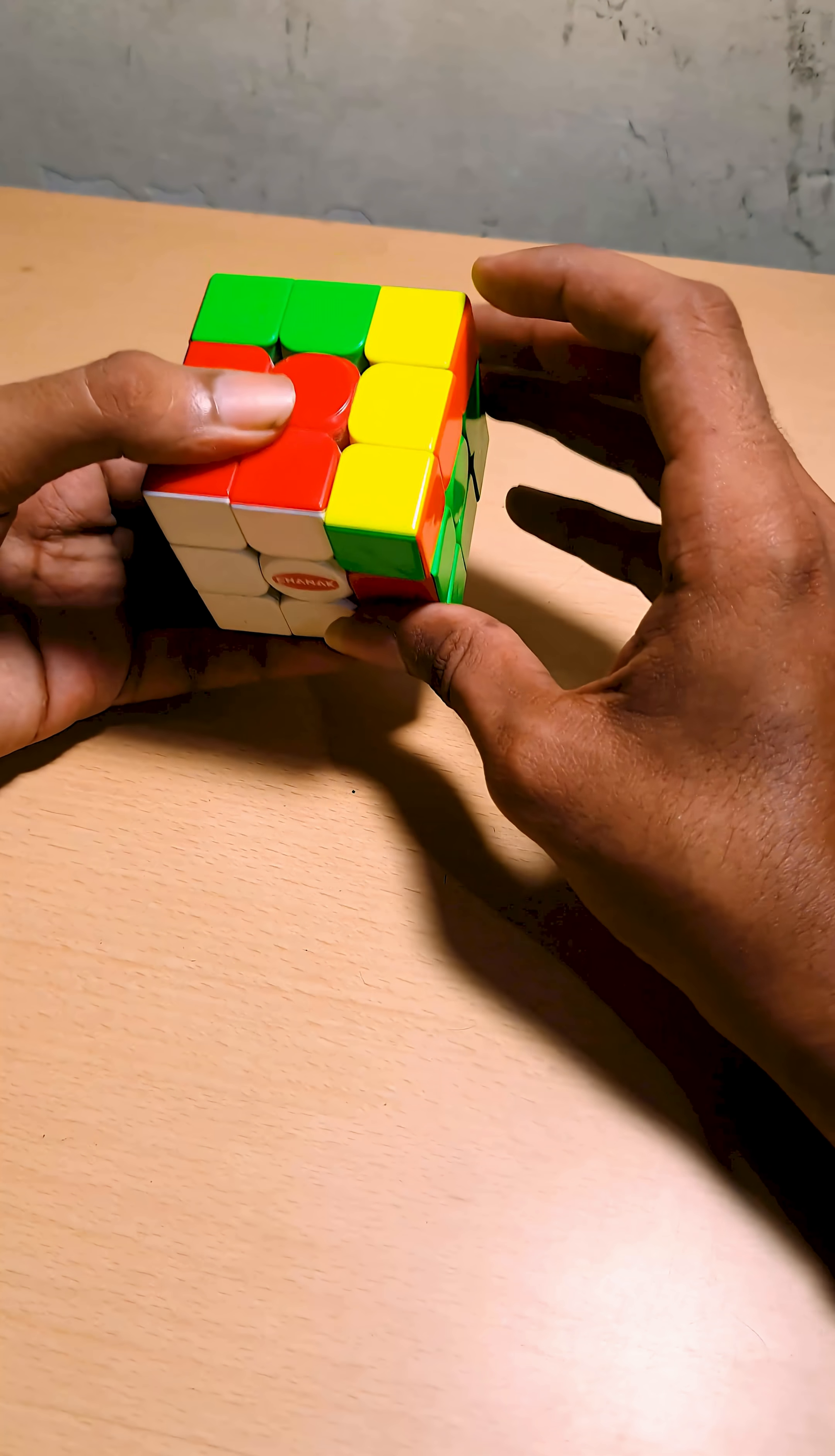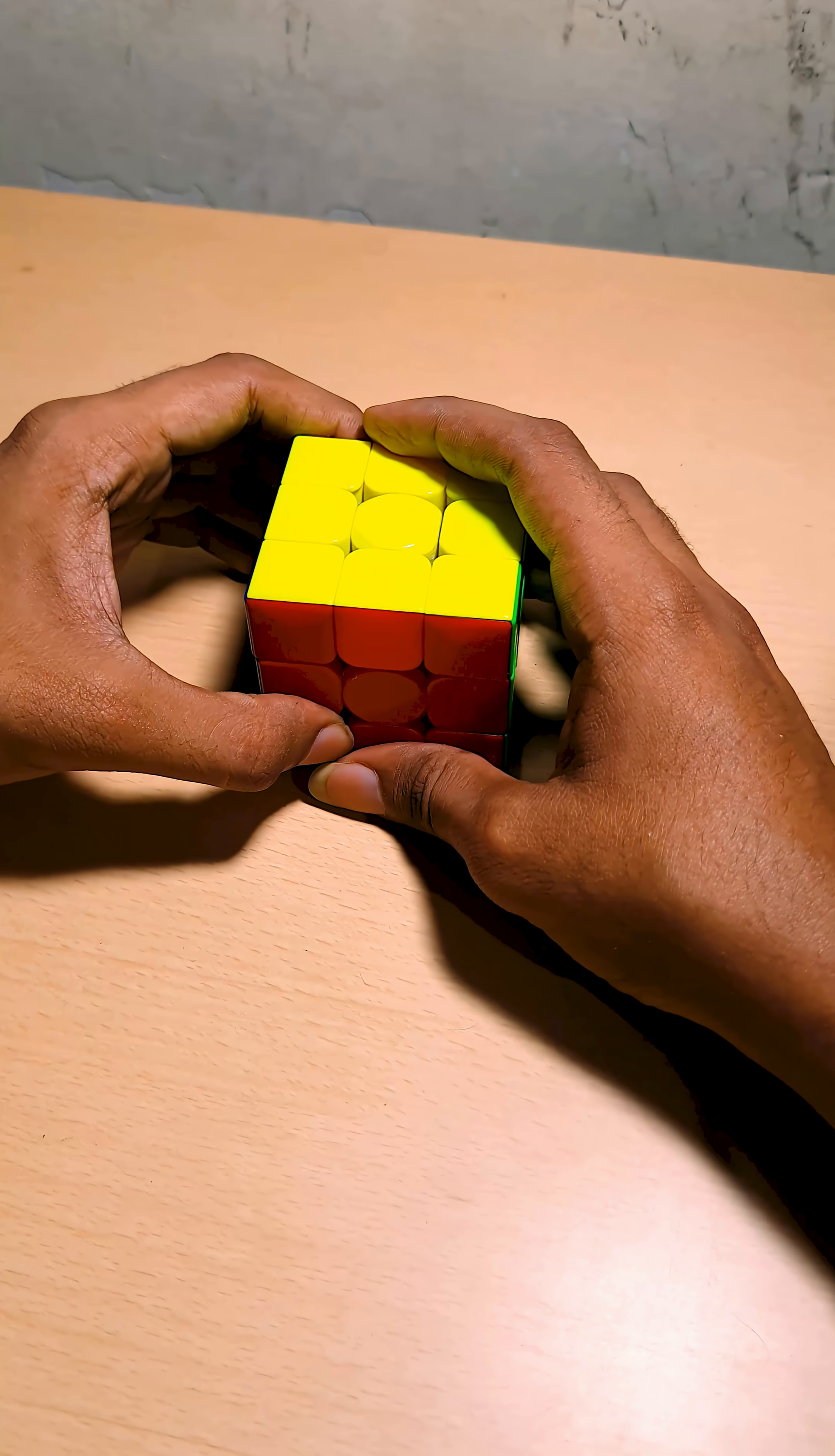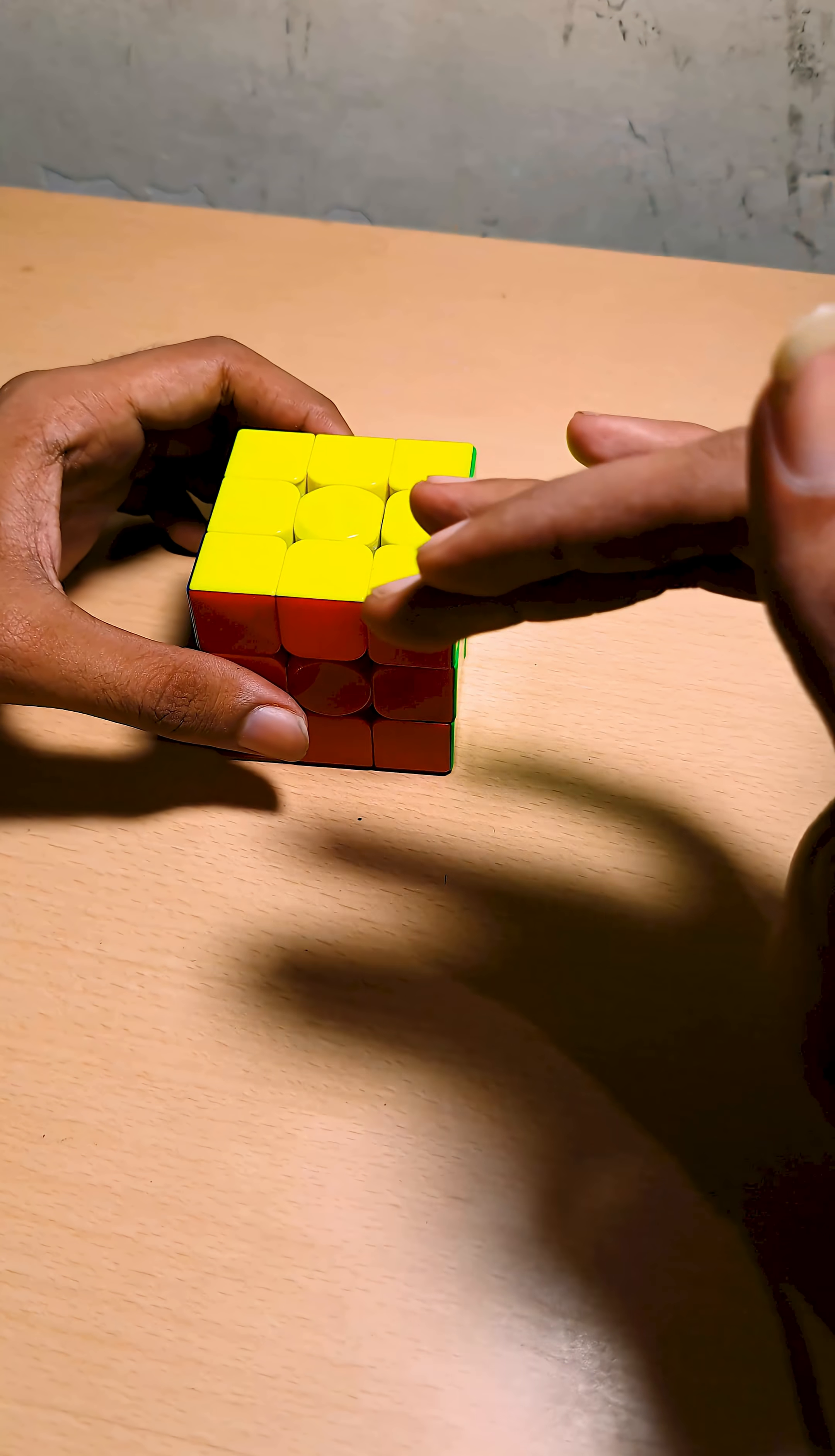They used symmetry like this position is similar to this position. And with using symmetry, they reduced the number of positions that are needed to be checked.